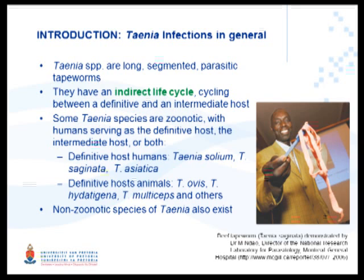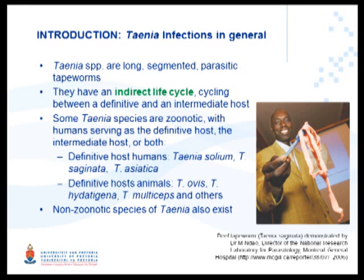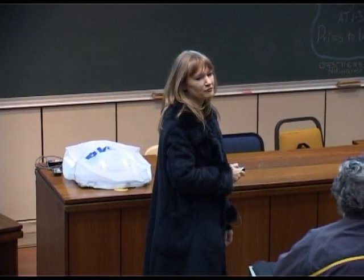Taenia tapeworms in general - they are long segmented tapeworms consisting of lots of what are called proglottids. Dr. Dow is showing a human tapeworm; that one specifically is Taenia saginata, which causes disease in cattle. They can be quite big, up to seven metres, and I've even heard lengths of 25 metres mentioned.